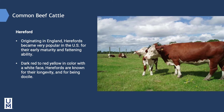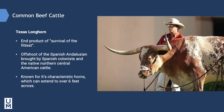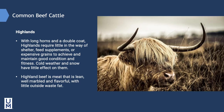Hereford, originating in England, became very popular in the United States for their early maturity and fattening ability. Dark red to red-yellow in color with a white face, Herefords are known for their longevity and for being docile. The Texas Longhorn is an end product of survival of the fittest — an offshoot of the Spanish Andalusian brought by Spanish colonists and native Northern and Central American cattle, known for its characteristic horns which can extend over six feet across. In some northern latitudes and higher altitudes, you'll find Highland cattle. With long horns and a double coat, Highlands require little shelter, feed supplements, or expensive grains. Cold weather and snow have little effect on them, and Highland beef is lean, well-marbled, and flavorful with little outside waste fat.